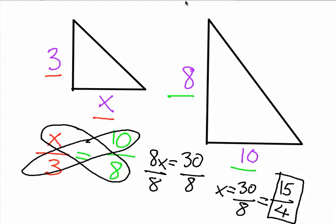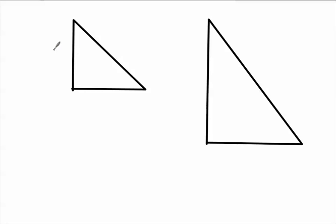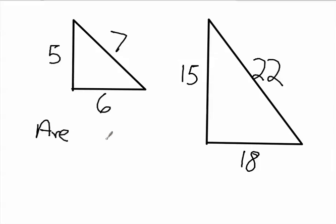And then sometimes, let me clear this one more time. Sometimes they'll give you sides, maybe they'll say this side's 5, this side's 15, this side's 6, this side's 18, and this side is 7, and this side is 22. And they'll ask you, are the triangles similar?